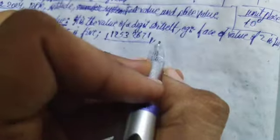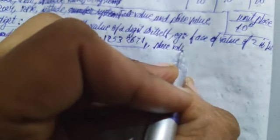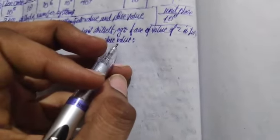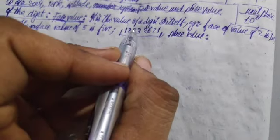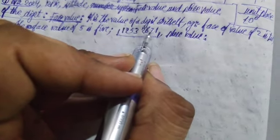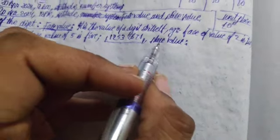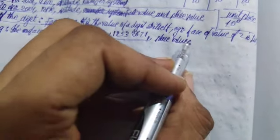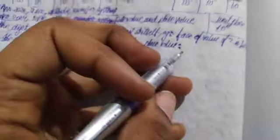Now coming to the place value: it is the value where we are going to multiply a number's face value with its position value.